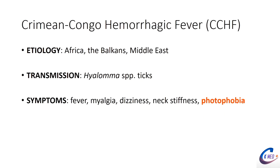Crimean-Congo hemorrhagic fever is found in Africa and the Balkans and is carried by Hyalomma ticks. A notable feature is photophobia and neck stiffness — similar to CNS infection symptoms like meningitis — but these are actually due to bleeding into those areas rather than the virus itself being there. The key things to know are the name and the Hyalomma tick vector.